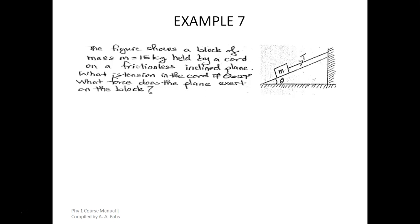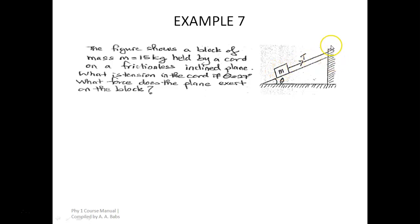Here is the first question for today's teaching. The figure shows a block of mass m equal to 15 kilograms held by a cord on a frictionless inclined plane. What is the tension in the cord if theta is 27 degrees — that is the angle of inclination — and what force does the plane exert on the block?